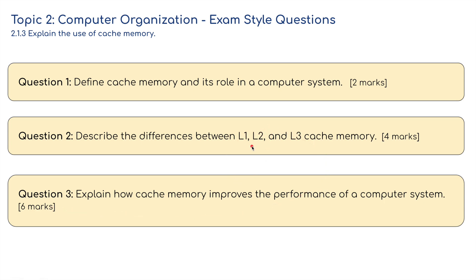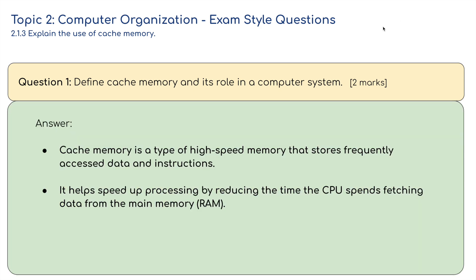Question one answer: cache memory is a type of high-speed memory that stores frequently accessed data and instructions. It helps speed up processing by reducing the time the CPU spends fetching data from main memory, e.g. RAM.